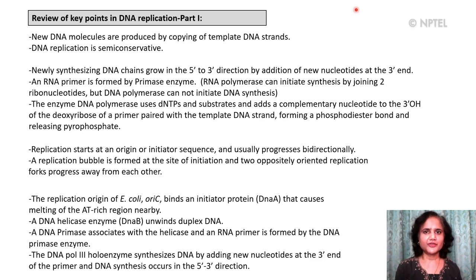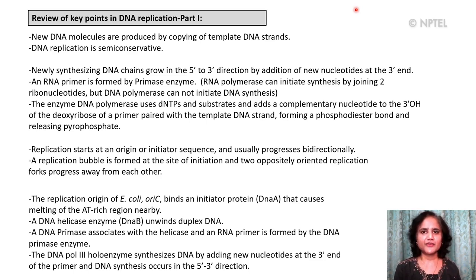New DNA molecules are produced by copying of template DNA strands. DNA replication is semi-conservative. The newly synthesizing DNA chains grow in the 5' to 3' direction by addition of new nucleotides at the 3' end. An RNA primer is formed by a primase enzyme. RNA polymerase can initiate synthesis by joining 2 ribonucleotides but DNA polymerase can't do this. The enzyme DNA polymerase uses dNDPs as substrates and adds a complementary nucleotide to the 3' hydroxyl of the deoxyribose of a primer paired with a template DNA strand.